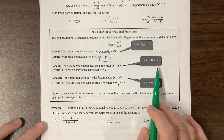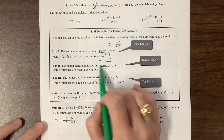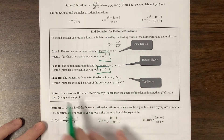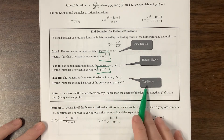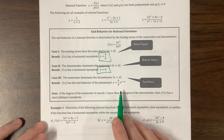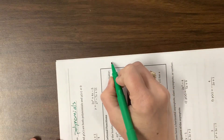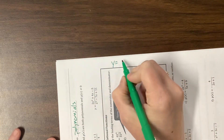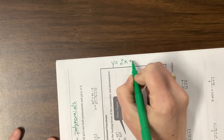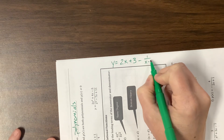If it's bottom-heavy, then it's always going to go to the asymptote y equals 0. When it is top-heavy, we're going to have to divide it to see what it approaches. When we start looking at those, we'll end up getting things like y equals 2x plus 3 minus 1 over x minus 4.